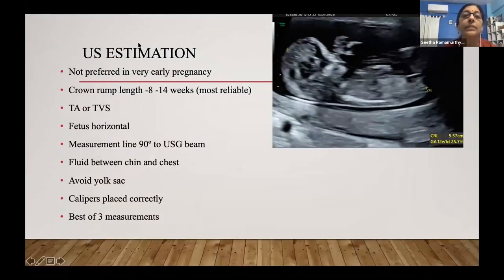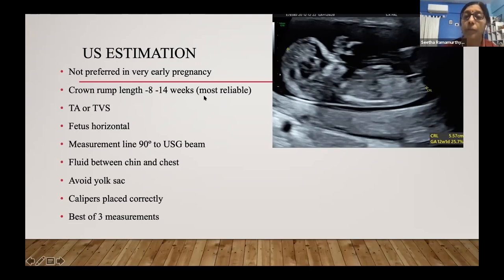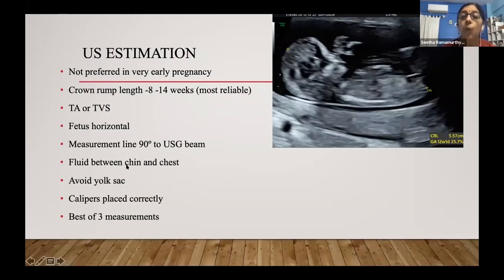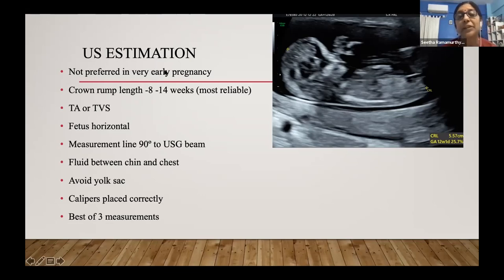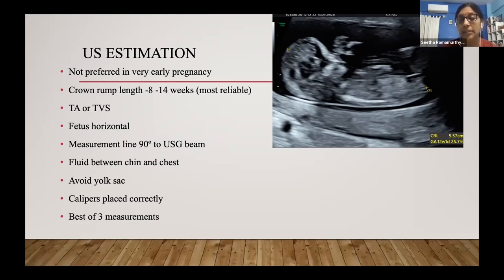The best method for dating is ultrasound estimation. Crown-rump length can be measured any time from 8 to 14 weeks, either trans-abdominally or trans-vaginally. The most reliable window is 11 to 14 weeks. Key criteria: fetus is horizontal, fluid between chin and chest, avoid the yolk sac, calipers placed correctly, and ideally take the best of three measurements. Try not to date very early — if seen before 8 weeks, call her again for the 11–13 week scan for the most accurate estimation.